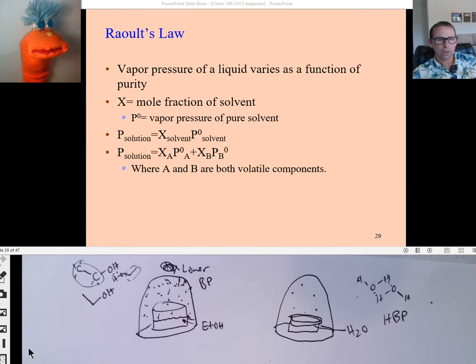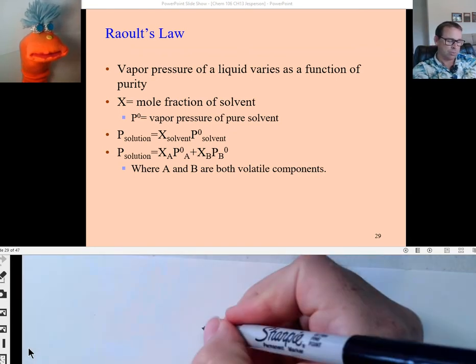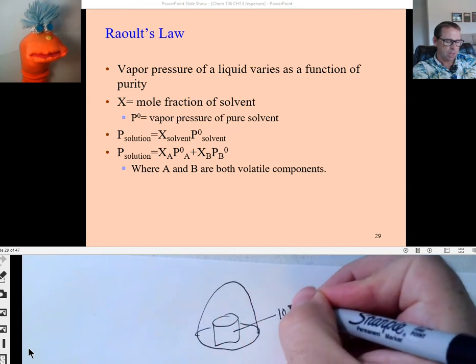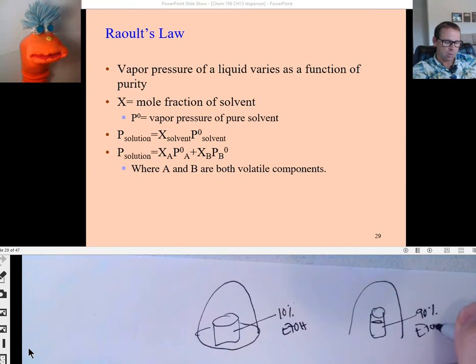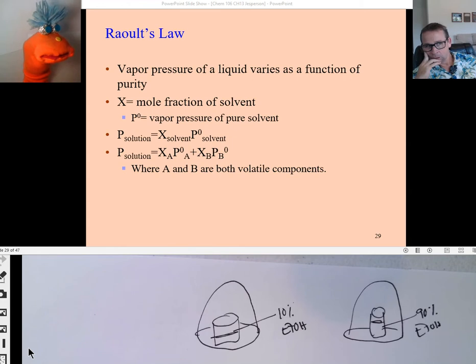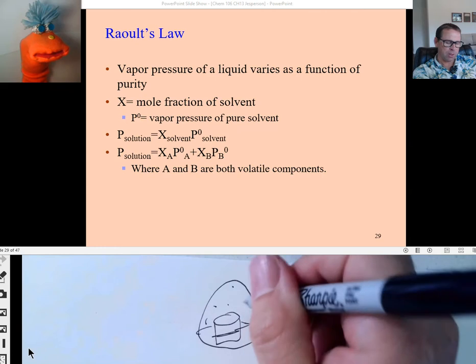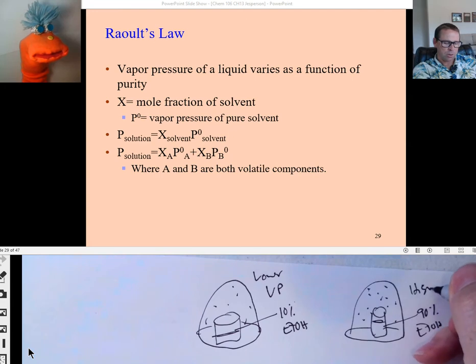And the more gas molecules that are colliding with this container here results in that vapor pressure. Water has higher boiling point, higher intermolecular forces compared to alcohol. Therefore, a lower vapor pressure on a container like that. Does that make sense? Yeah, okay, I get that. So if I do the same thing, but now I make a solution. I mean, you tell me this. If I have a solution here of 10% ethanol, and I have another solution here of 90% ethanol, which one do you think will have a higher vapor pressure?